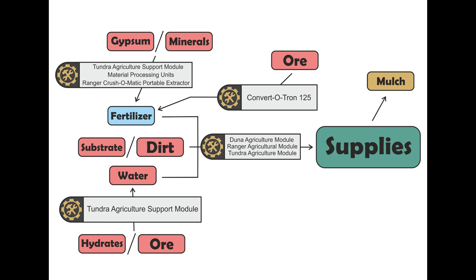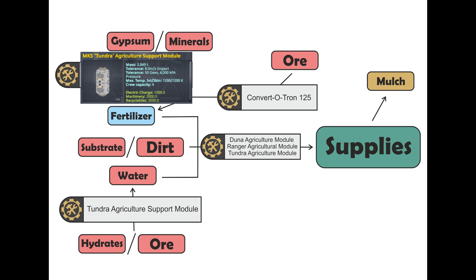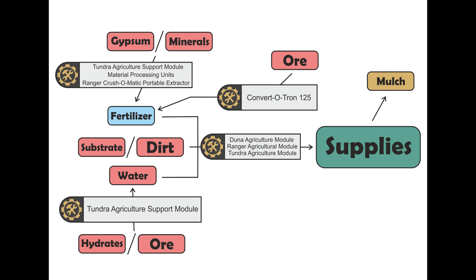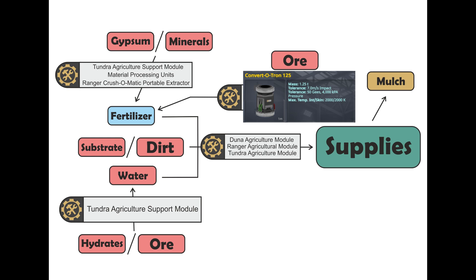Let's dive in and see the first production chain. The first production chain we will be talking about is the chain producing supplies, mainly because supplies are the first resource that you will need in your newly founded colony. To produce supplies using standard MKS high-efficiency production chains — that is, not agroponics — you will need to mine a couple of resources. We start off with mining gypsum and minerals or ore to produce fertilizer. You can process gypsum and minerals into fertilizer in the Tundra Agriculture Support Module, in one of the Material Processing Units, or in the Ranger Crush-O-Matic portable extractor. And if you decide to produce fertilizer from stock ore, you can do it in the small Convertotron 125.